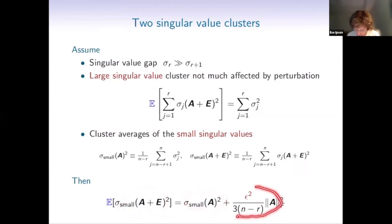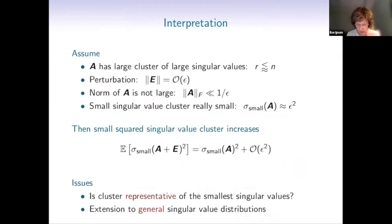So we have the average of the original small singular values and the perturbed small singular values. And then the result that I gave you before implies that in expectation, the perturbed singular value, its cluster center is that of the original matrix plus an O of epsilon squared term. So again, here's an interpretation. Suppose that we have our large singular values, and we have a lot of large singular values compared to the matrix dimension, so only very few small ones. We commit a perturbation on the order of epsilon. We assume that the norm of A is not too large, so it doesn't overwhelm our epsilon squared term. And then we have a very small cluster of singular values. And this is its cluster center. So then for the small singular values, its cluster center in expectation increases compared to the original one by epsilon squared. We have epsilon squared here because we have the square of the singular values here. So then the issues are, is the cluster representative of individual singular values? What do we do to extend things to general singular values?